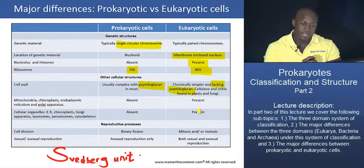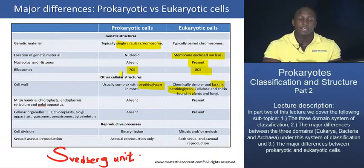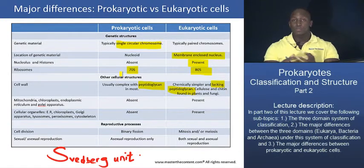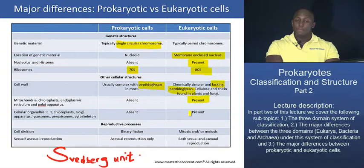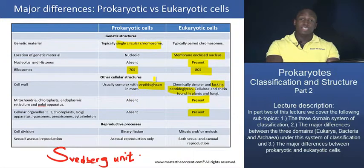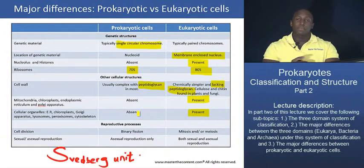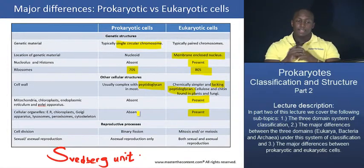What about key organelles? The mitochondria, chloroplasts, endoplasmic reticulum, Golgi apparatus, lysosomes, peroxisomes, and cytoskeletal elements are all organelles present in eukaryotic cells but absent in prokaryotic cells. If you were given an electron micrograph of a prokaryotic cell and a eukaryotic cell without being told which was which, you should be able to identify them based on the fact that you will not see any membrane-bound cellular organelles in the prokaryotic cell.